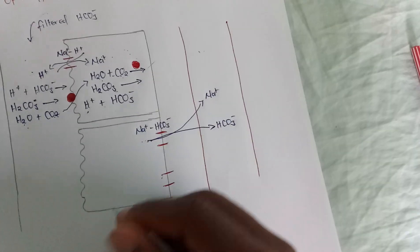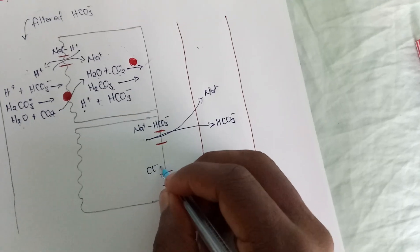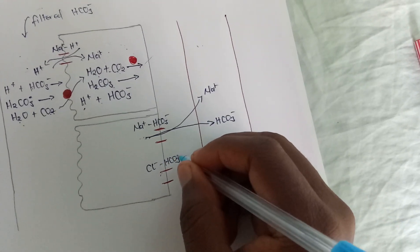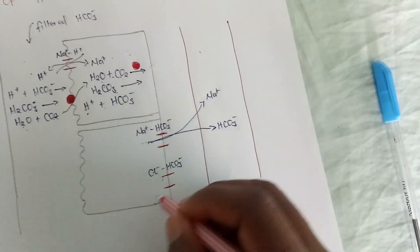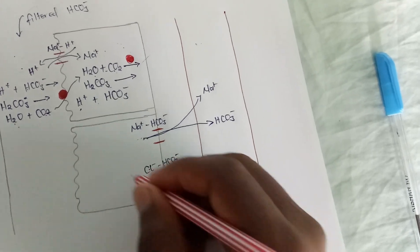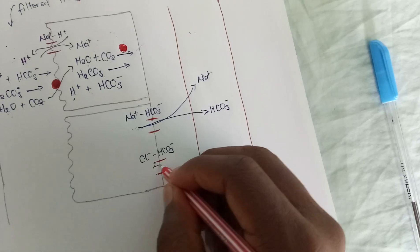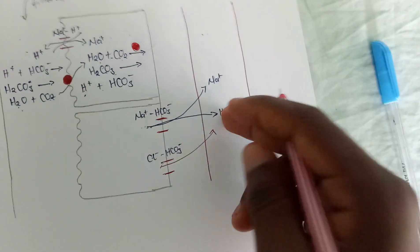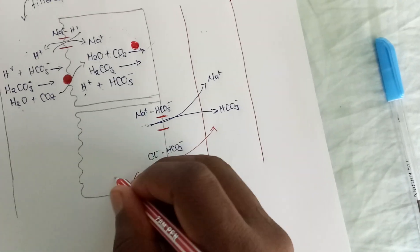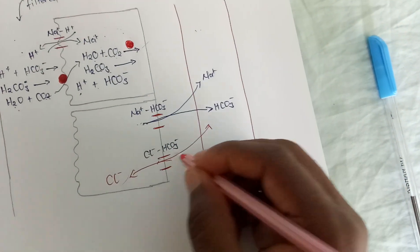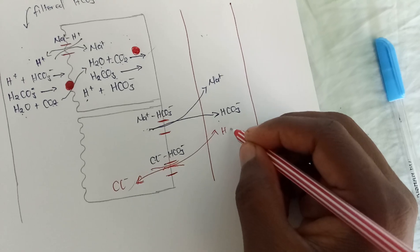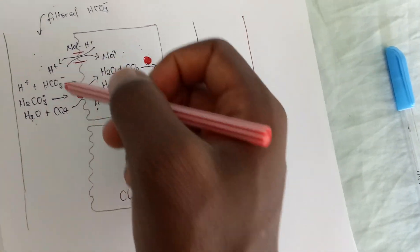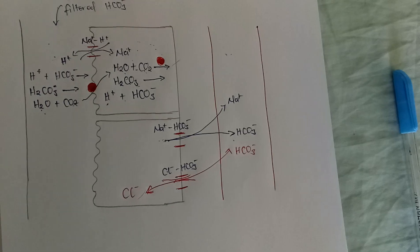The second channel on the basolateral side is the chloride-bicarbonate exchanger. From the word 'exchanger,' it exchanges chloride for bicarbonate — the bicarbonate in the cell is exchanged for chloride, so bicarbonate exits the cell into the peritubular capillary and chloride enters the cell. This is how bicarbonate is reabsorbed into the system and how hydrogen ions are secreted.